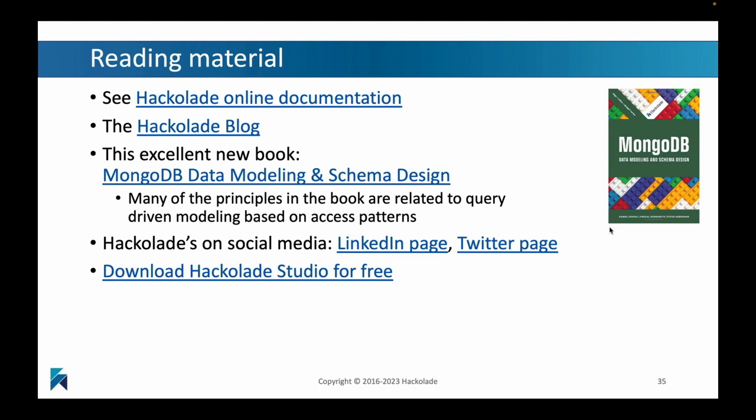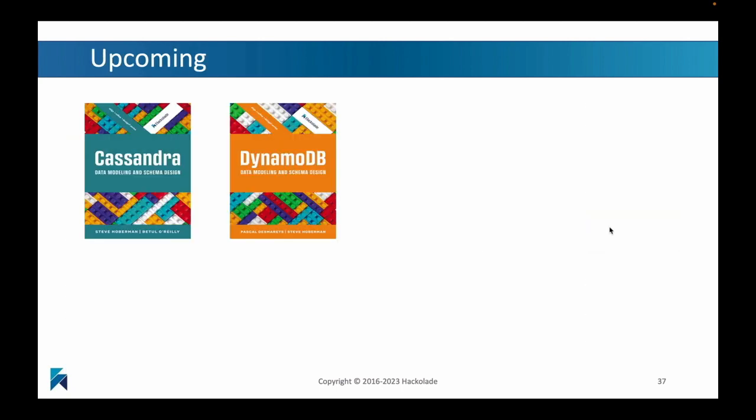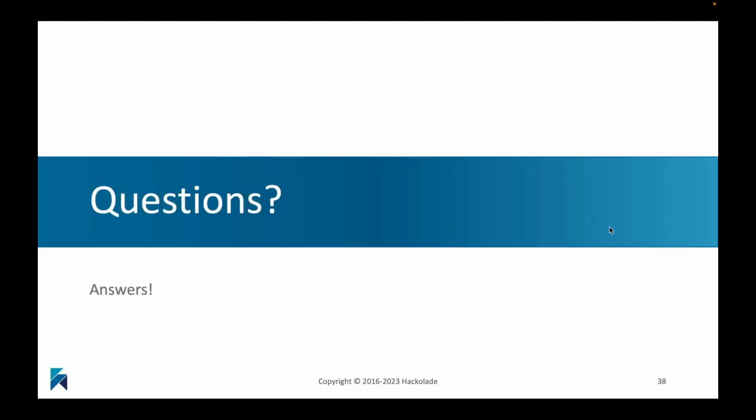That wraps up this little overview section of the tutorial. I'm going to point you to some reading materials — obviously our documentation, our blog, the fantastic new book on MongoDB data modeling, which also has siblings for Neo4j data modeling, for Oracle 23c, for Elasticsearch, and there are some additional books coming in the near future as well. With that, I'm going to wrap up this overview and thank you for your attention and wish you a wonderful rest of your day.